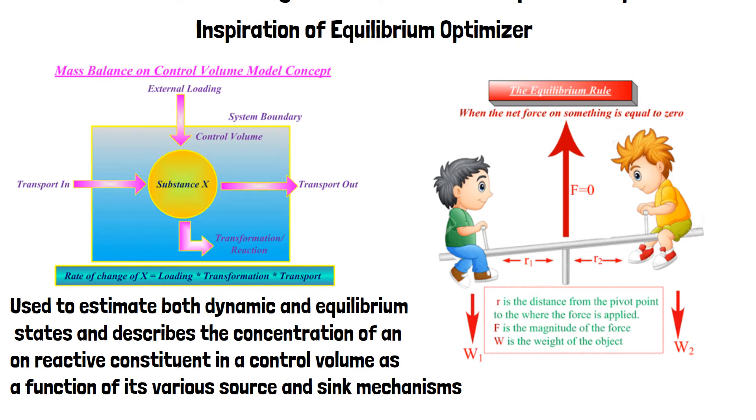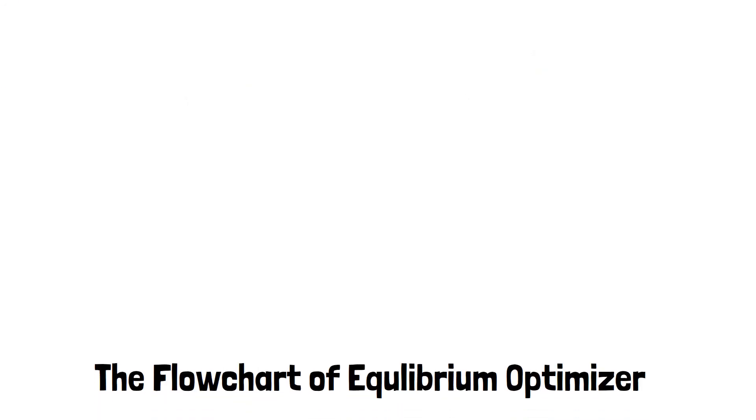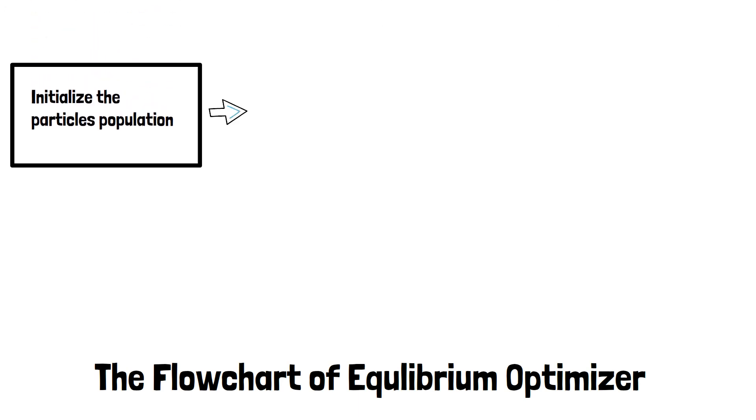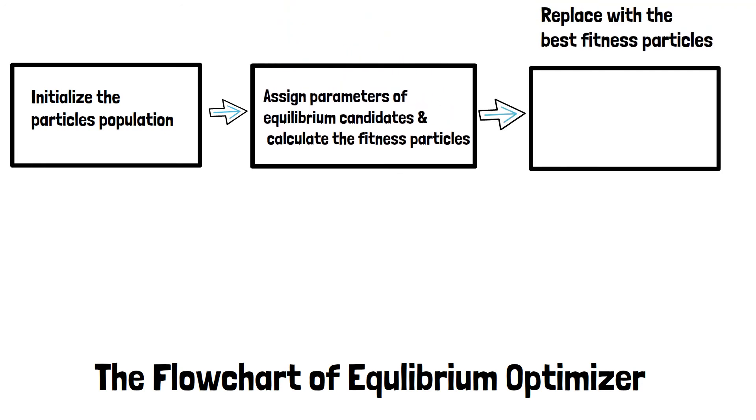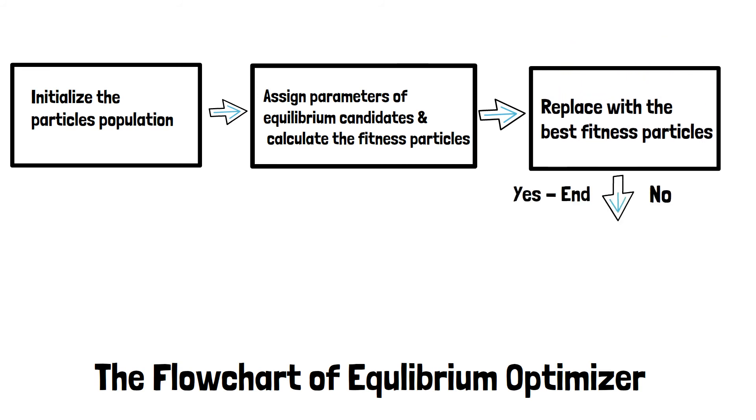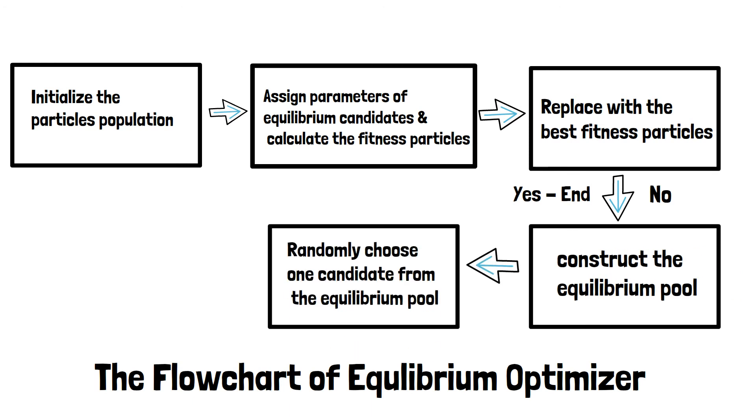The flowchart of Equilibrium Optimizer is first of all initialize the particles population, then assign parameters of equilibrium candidates and calculate the fitness particles, replace with the best fitness particles, if yes then and if no then construct the equilibrium pool, randomly choose one candidate from the equilibrium pool and calculate the fitness.